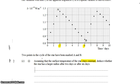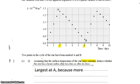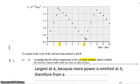It's largest at A because more power is emitted, therefore from a larger surface area. Hence, a larger radius.